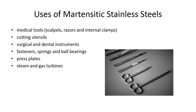Uses of martensitic stainless steels include medical tools — scalpels, razors, and internal clamps — cutting utensils, surgical and dental instruments, fasteners, springs, and ball bearings, as well as press plates, steam and gas turbines. There's a pretty wide variety of applications: anything you need strength and corrosion resistance for, like scalpels, razors, clamps, steam and gas turbines.